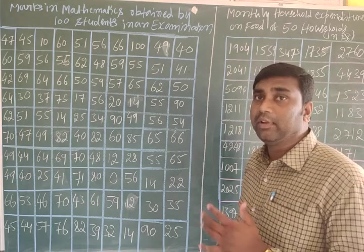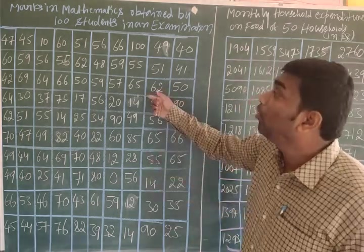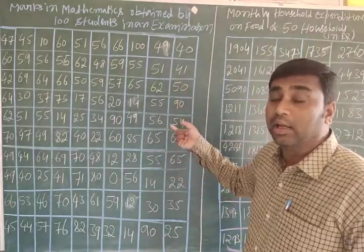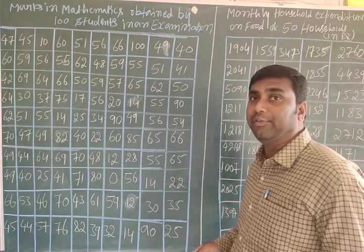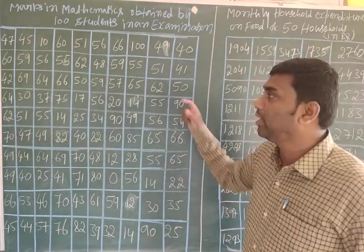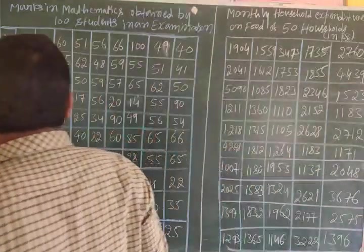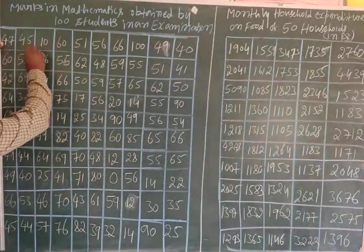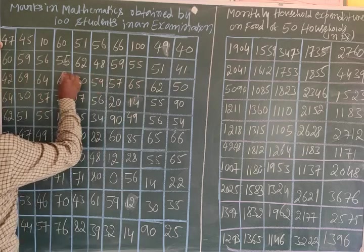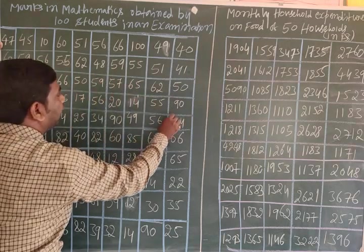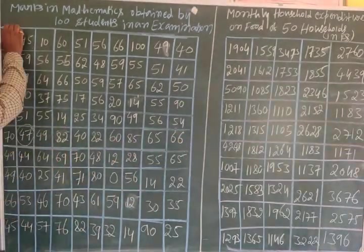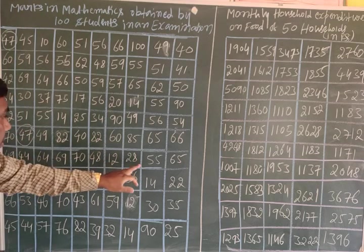Without organized or classified data, we cannot say how many passed, how many failed, how many got 100, how many got less marks, how many just passed, how many got above 50. For example, take the value 47 — is there another student who got the same mark of 47? You have to observe and search carefully.